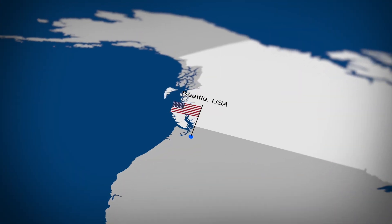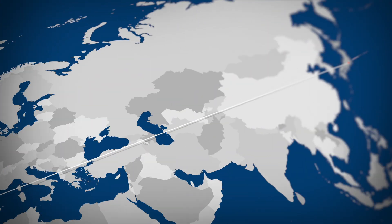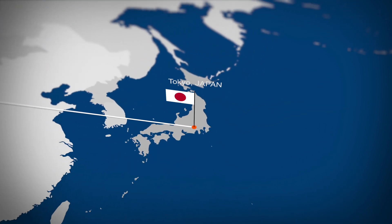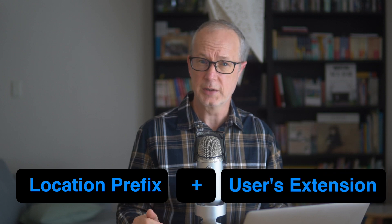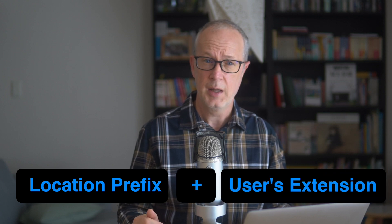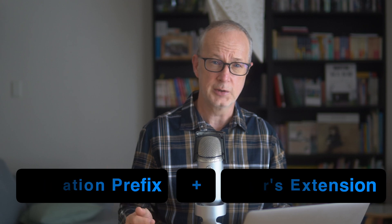The simple part is that if you have only one location, you can just dial the user's extension and there's no other configuration needed. However, in a previous video we set up a location for Seattle in the U.S. and one for Tokyo in Japan. Because we have two locations in two separate countries, we need to set up some internal dialing rules — a location prefix that users need to dial when calling from Seattle to Tokyo, and one for calling from Tokyo to Seattle.